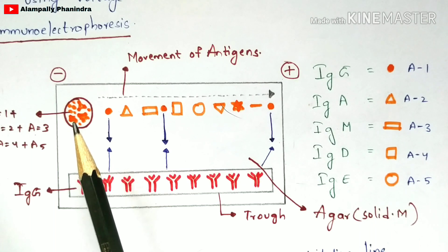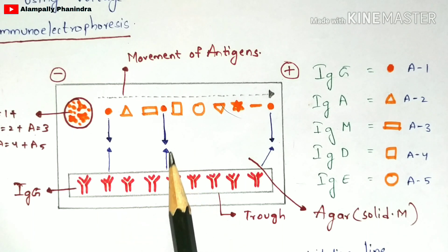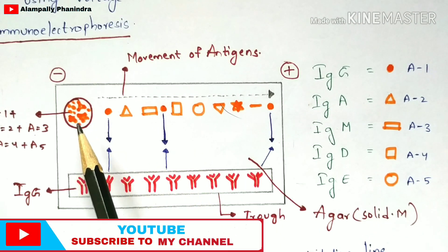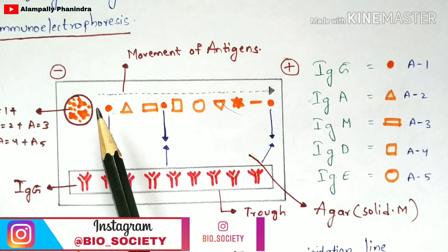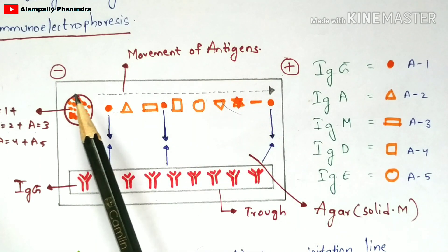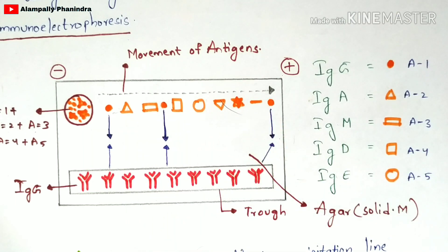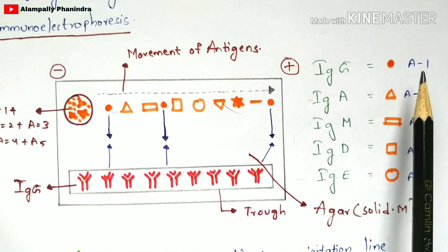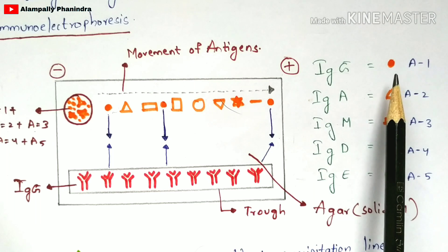Now you apply a particular voltage of electric current to the glass plate. Once current is applied, the different types of antigens present in the well start migrating toward the positive direction, as indicated by the arrow marks. The antigens move from the negative direction toward the positive direction through the gel.